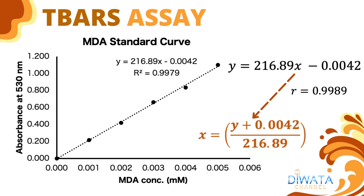The remaining ingredient is the R-squared value, or coefficient of determination, which is often used to give a better insight of the straight line, even though it does not indicate the direction of the correlation. In this example, our R-squared value is 0.9979, while R, or its square root, is 0.9989. For strict analytical work, R should be 0.9970 or better. We can now calculate the unknown MDA concentration of our fish samples from the equation y = 216.89x − 0.0042, transposed to x = (y + 0.0042) / 216.89.